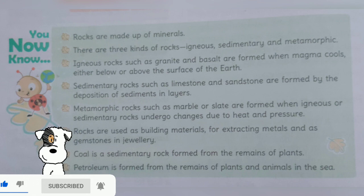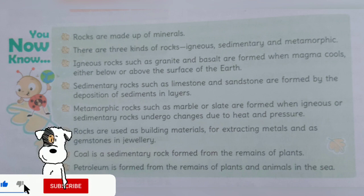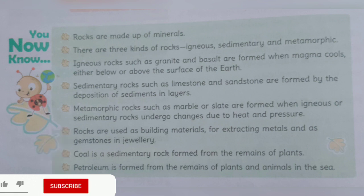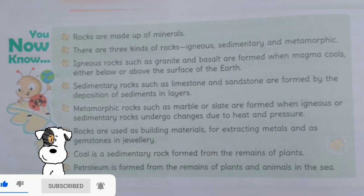Six, rocks are used as building materials, for extracting metals, and as gemstones in jewelry. Dhatu ke nirman ke liye aur abhushan mein ratna ke rup me chaktaneo ka upyog nirman saamagri ke rup me kiya jata hai.